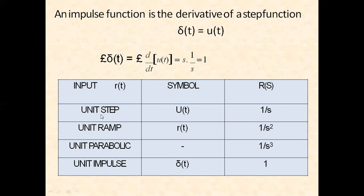Summary of test signals: Unit step input, symbol u(t), Laplace transformation R(s) equals 1/s. Unit ramp, symbol r(t), Laplace transformation equals 1/s². Unit parabola, Laplace transformation equals 1/s³. Unit impulse, symbol delta, Laplace transformation equals one.